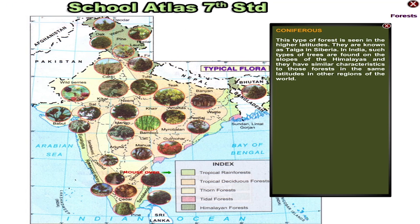Coniferous. This type of forest is seen in the higher latitudes. They are known as Taiga in Siberia. In India, such types of trees are found on the slopes of the Himalayas and they have similar characteristics to those forests in the same latitudes in other regions of the world.